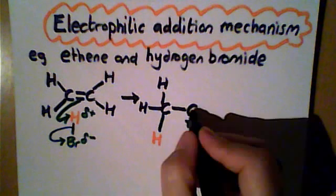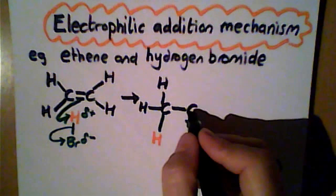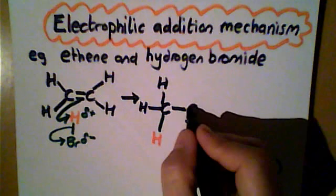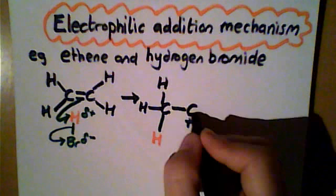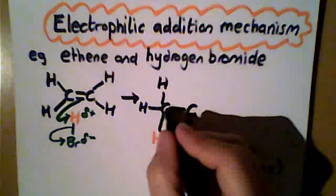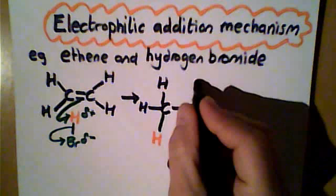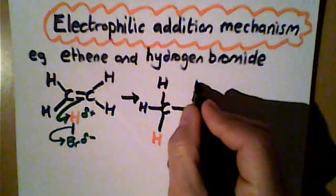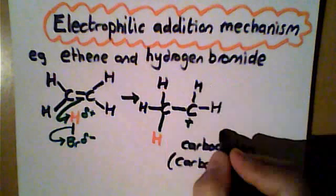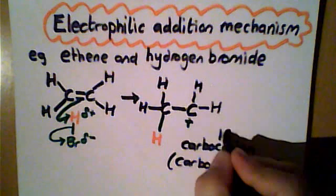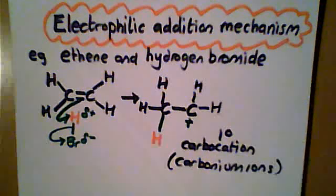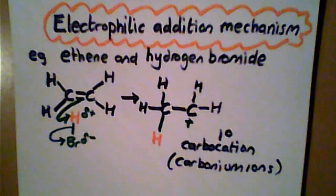Because the carbon is attached to only one other carbon — the carbonium ion is attached to one other carbon — we call it a primary carbocation or primary carbonium ion.